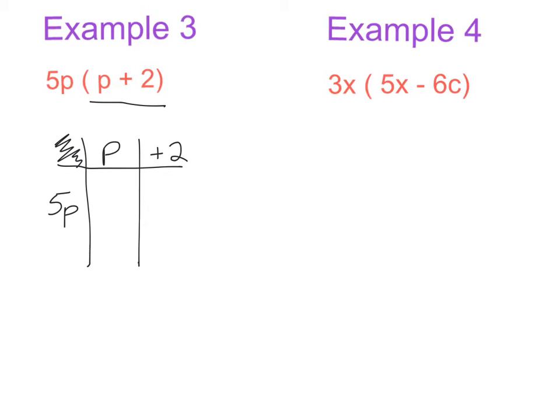We're going to multiply out. We can write 1p here if it makes things easier. 5 by 1 gives me 5, and p multiplied by p gives me p squared. 5 multiplied by 2 gives me 10, and we have the p here so it's 10p, and it's plus 10p. So my answer is 5p squared plus 10p.